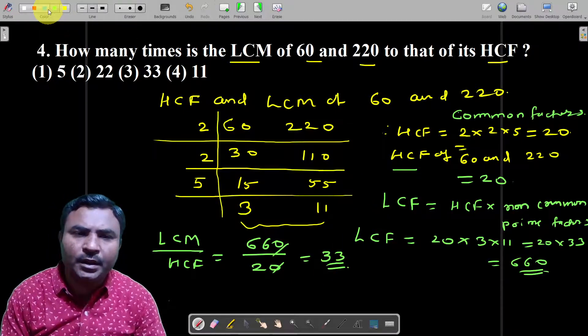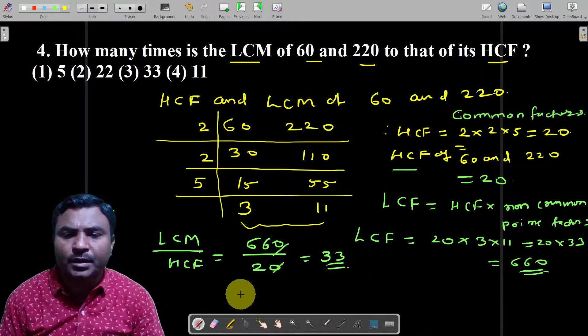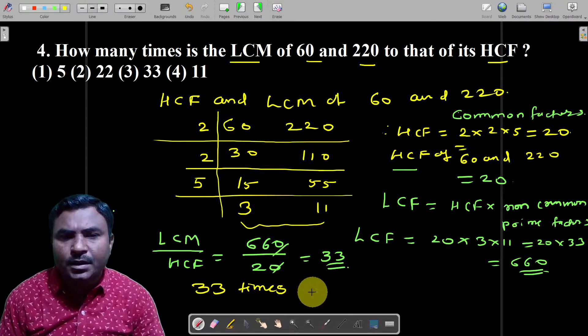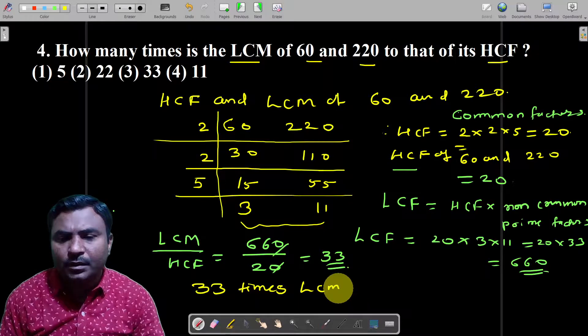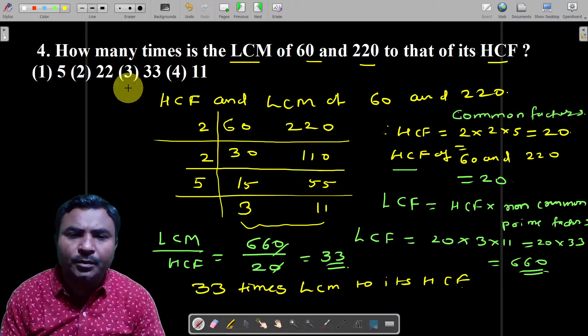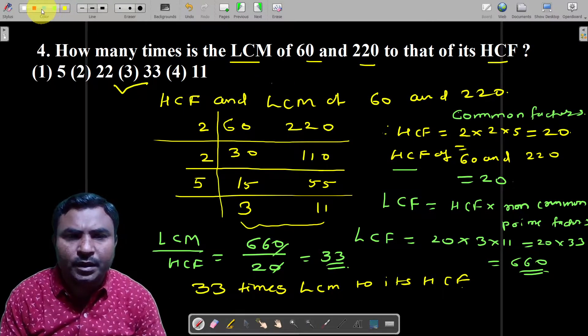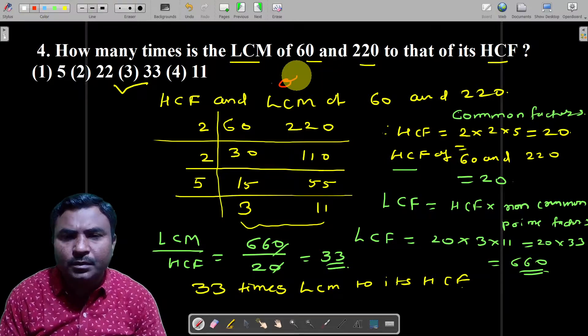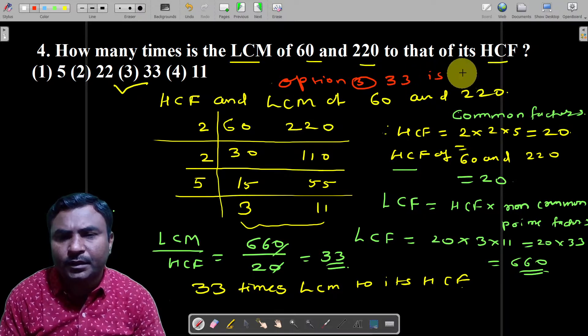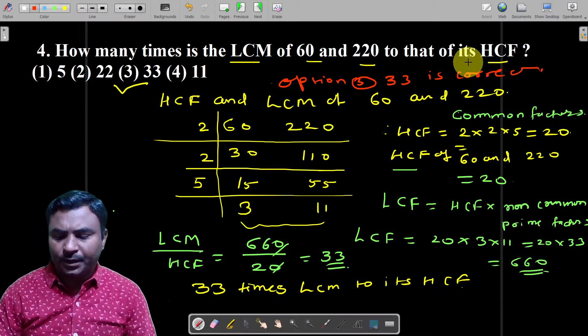How many times? 33 times. LCM to HCF is 33 times, so the answer is option 3 and the answer 33 is correct.